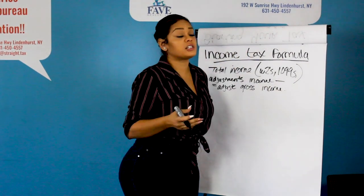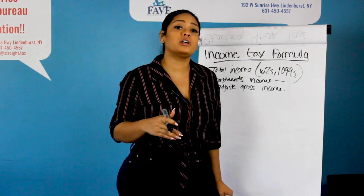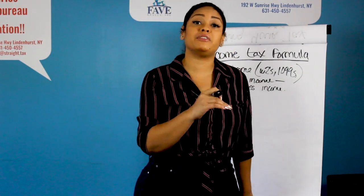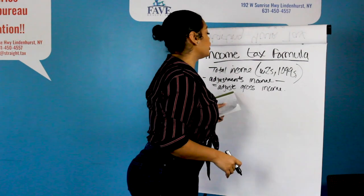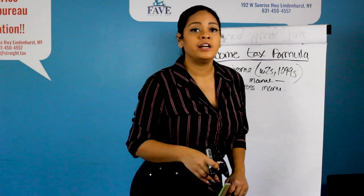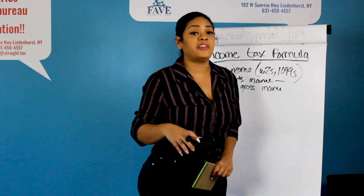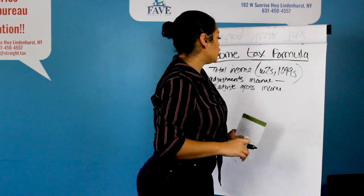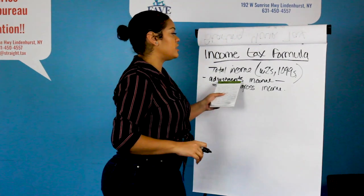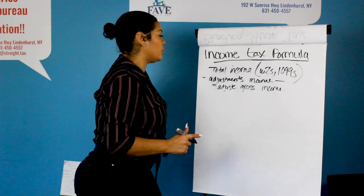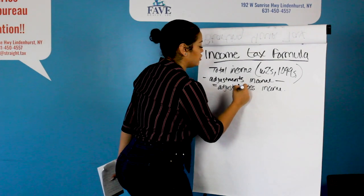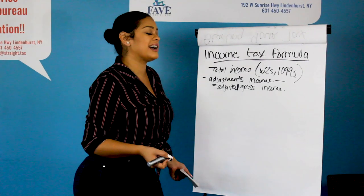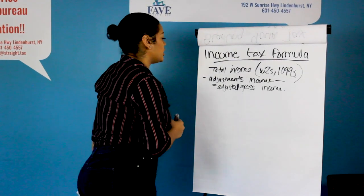For those of you that are self-filers and file on TurboTax, you'll notice that every year TurboTax asks you to put in your AGI for the previous year. The reason they want your AGI for the previous year is to compare it to your current year and also to use it as a form to validate your identity. So your total income minus the adjustments to your income is going to equal your adjusted gross income. We haven't gotten down to whether you have a tax refund or a tax balance yet, but we're going to get there in just a second.